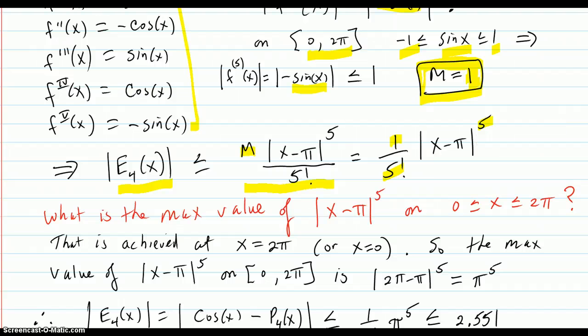Now we need to know what is the maximum value of x minus π on that interval. The farthest that x could be away is at 0 or 2π. So the max value of x minus π to the fifth power on this interval is 2π minus π, which is π to the fifth power.